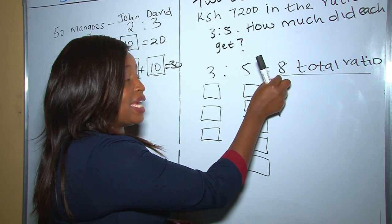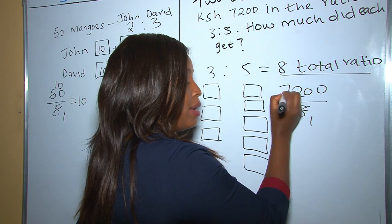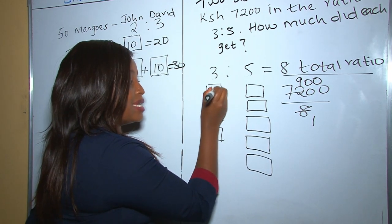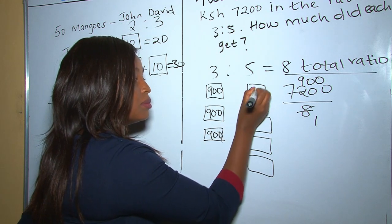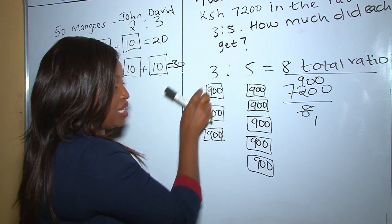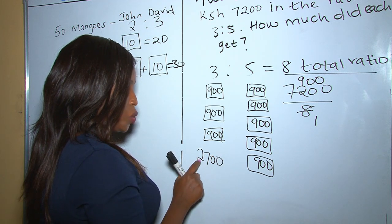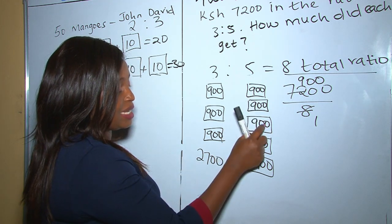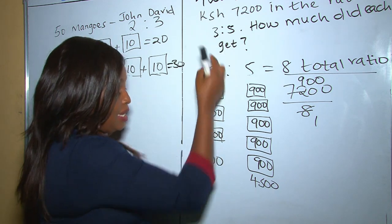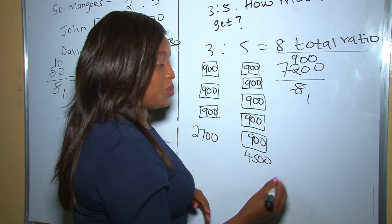After getting our total ratio as 8, we divide 7200 by 8, which gives 900. So each part is 900. The first sister has three parts: 900 times 3 equals 2700. The second sister has five parts: 900 times 5 equals 4500. So the first sister got 2700 and the other got 4500.